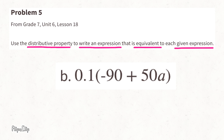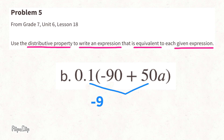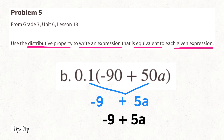For Part B, using the distributive property, multiply the outside term by both terms inside the parentheses. One-tenth times negative 90 is 10 times smaller than negative 90, which is −9. Then one-tenth times 50a: 10 times smaller than 50a is 5a. Since −9 and 5a are not like terms, we keep the result as −9 + 5a.